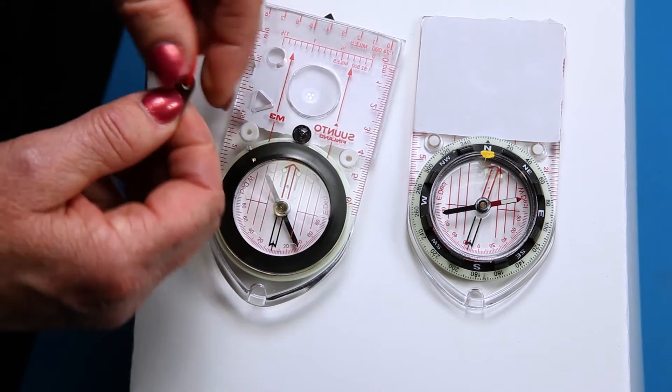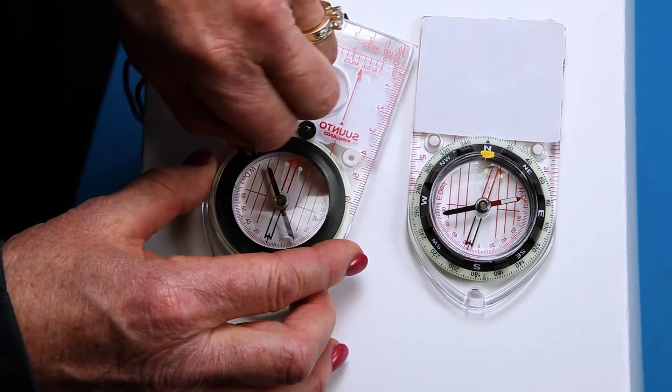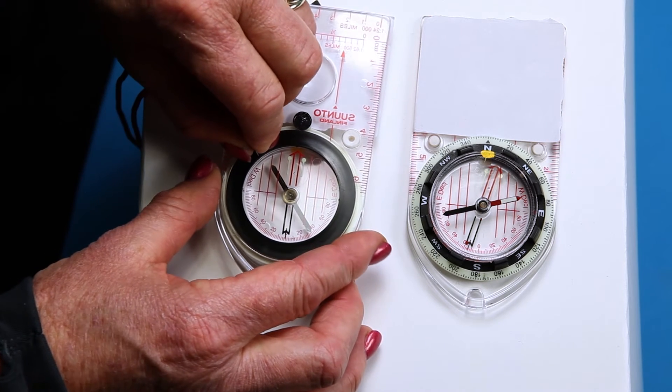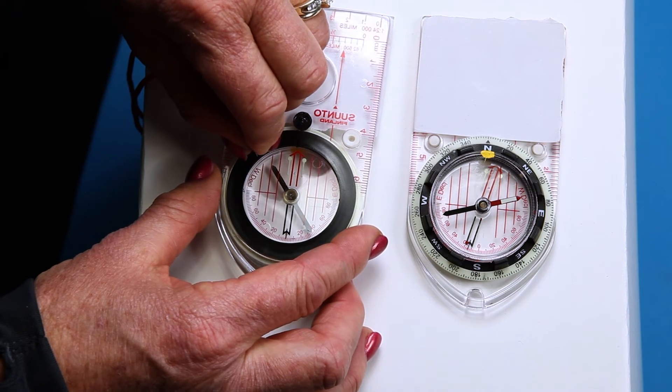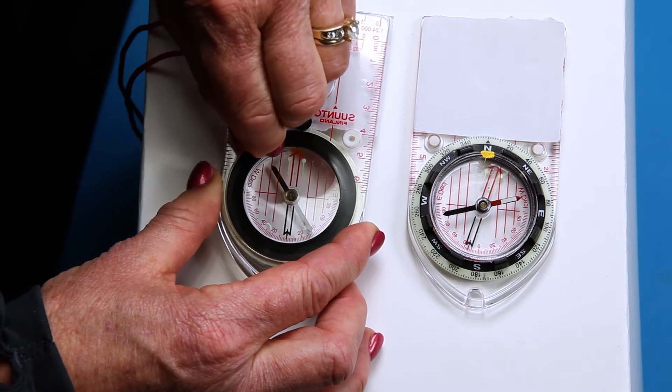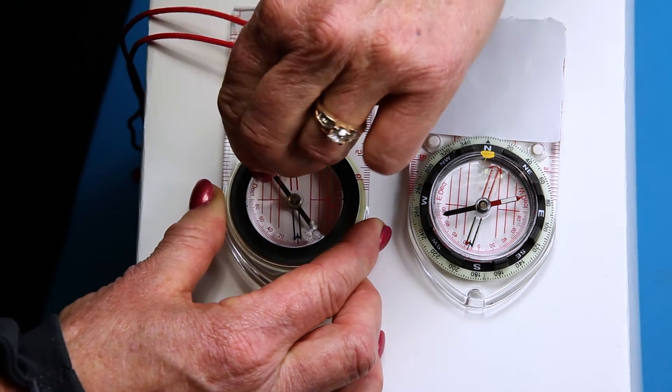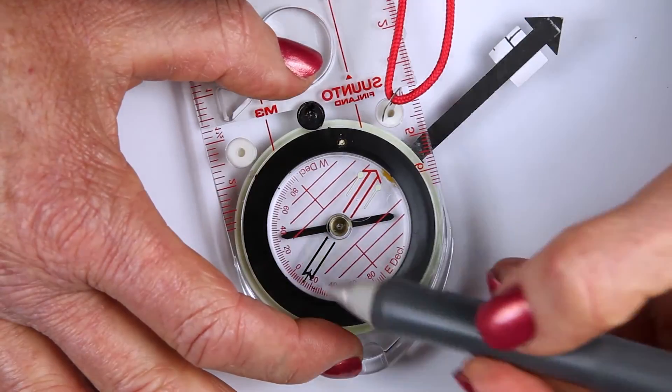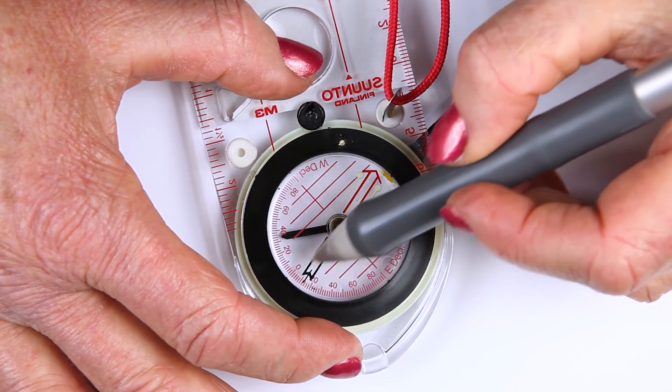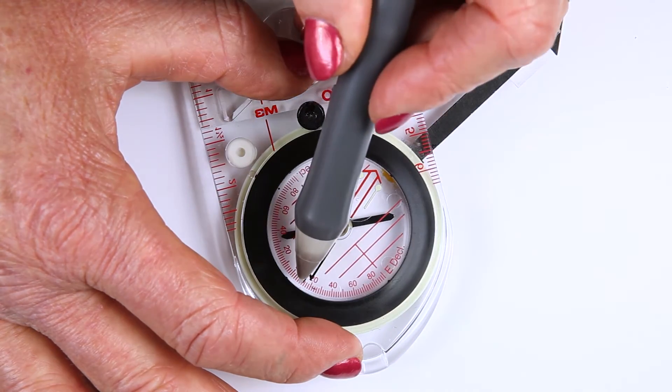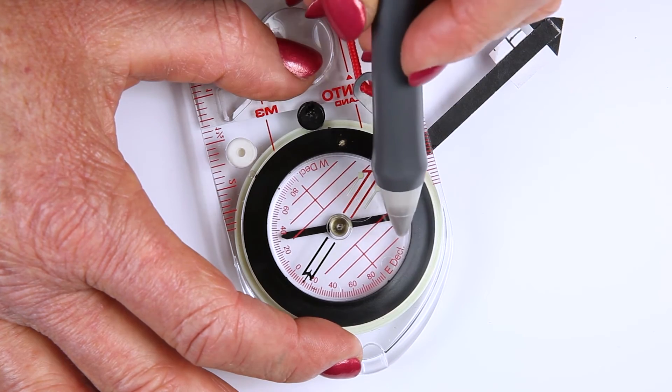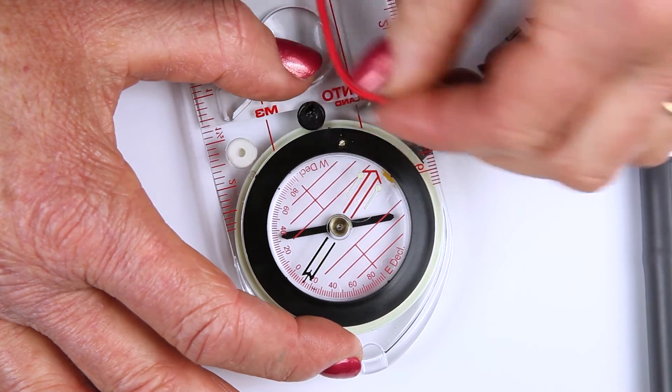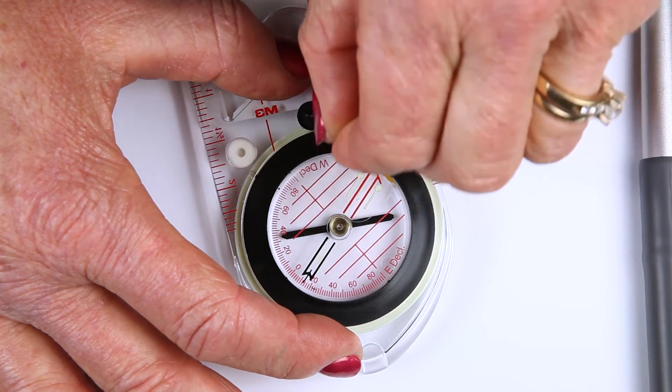Turn your compass over and look at the back. There's a little brass screw and on the lanyard is a little key. Push the little key in there real good so it won't slip and turn it clockwise about a half a turn until the indicator right here, this little black tail right here, points to 12 degrees east declination. Just turn it back and forth until you get it right. There we go.